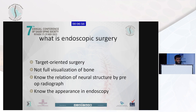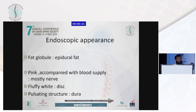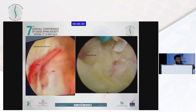What is endoscopic surgery? It is target-oriented surgery, not full visualization of bone. You must know the relation of neural structures by preoperative radiograph and know the appearance of structures in the endoscopy. If we find fat globules, that means it is epidural fat. If we find pink accompanied with blood supply, it is mostly nerve. If it is fluffy white, it is a disk. And if there is a pulsating structure, this is the dura. We can see this in the picture: ligamentum flavum in yellow, dura, herniated nucleus pulposus, and epidural fat.